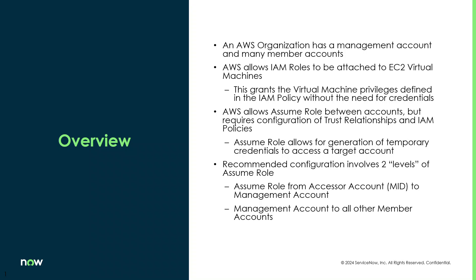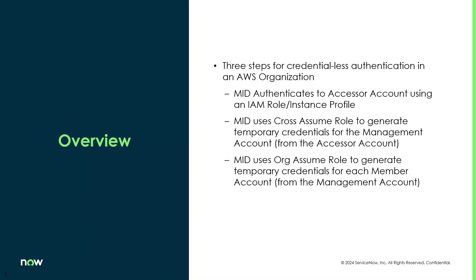The ServiceNow recommended configuration for AWS Cloud Discovery involves two levels of Assume Role: an Assume Role from the accessor account to the management account — the accessor account being the account the MID server is running in — and then an Assume Role from the management account to all other member accounts when Cloud Discovery is discovering those member accounts. There are three steps for credentialless authentication: first, the MID authenticates to the accessor account using the IAM role or instance profile attached to the EC2 instance; second, the MID uses cross Assume Role to generate temporary credentials for the management account; and third, if discovering a member account, the MID uses org Assume Role to generate temporary credentials for that member account, going from the management account to the member account.